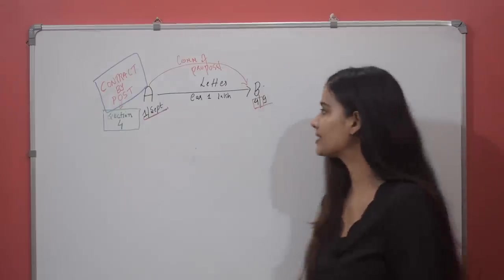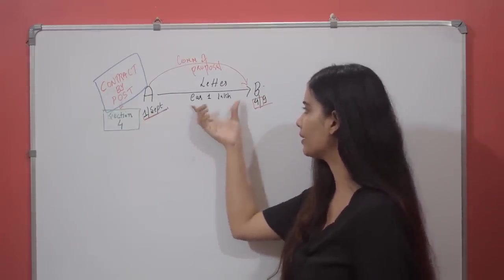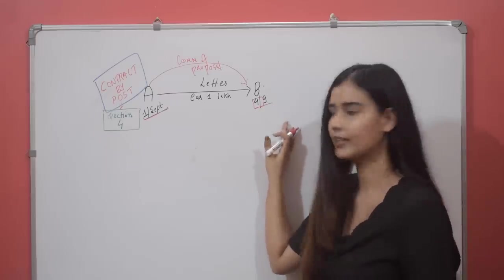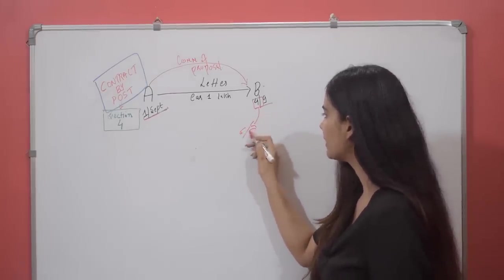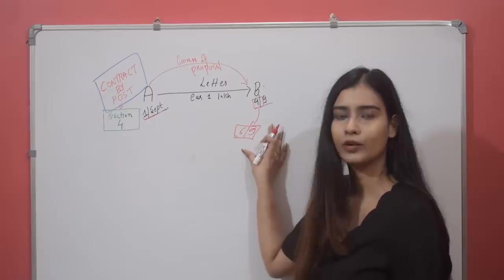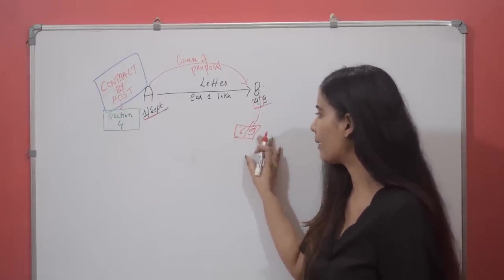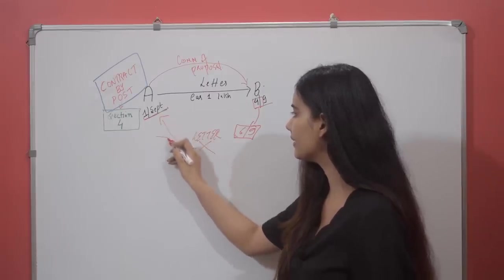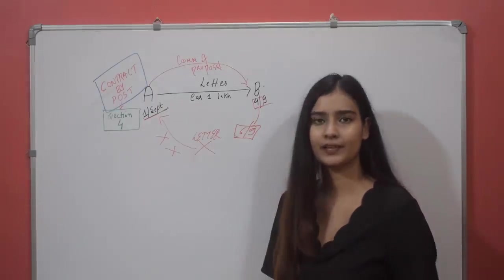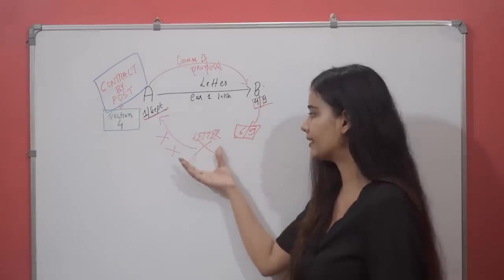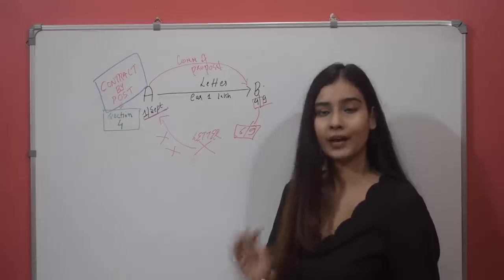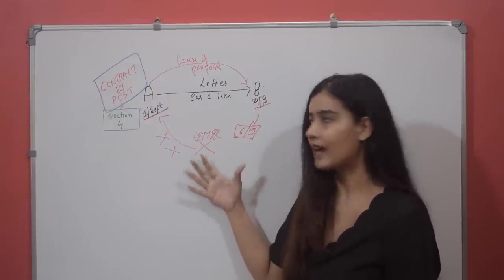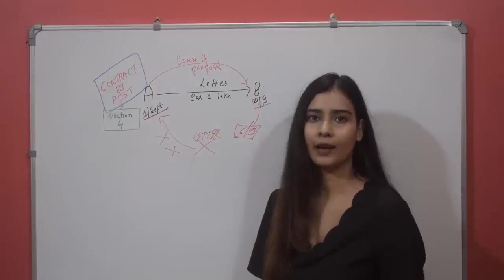Now let's see one more interesting example. Taking the same example — A posted a letter on 1st September to B asking whether he would buy his car for one lakh rupees. On 4th September, B received the letter. He considered it and on 6th September he posted his letter of acceptance. Now what happens — this letter of acceptance never reached A. The letter was lost in transit, or burned, or whatever — but that letter was not received by A. Now the question is: is the contract concluded in this case? This is exactly the kind of question that comes in your exam.